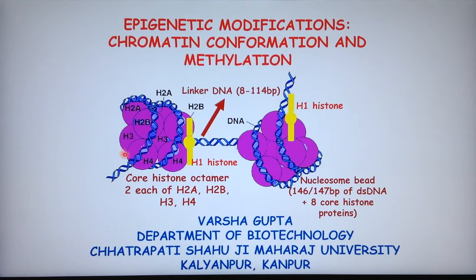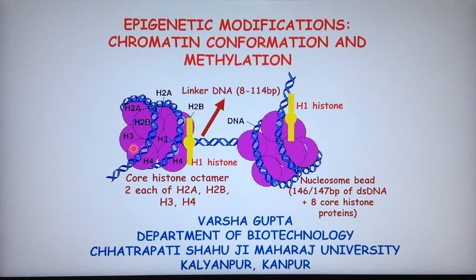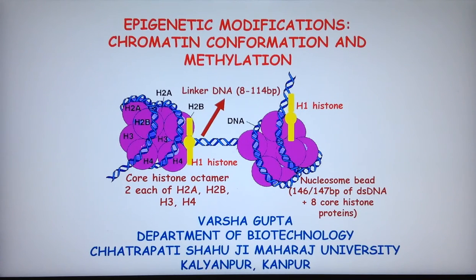The best characterized component of chromatin structure is the nucleosome, which represents the first level of packaging. The DNA is wound around a protein disc consisting of histones H2A, H2B, H3, and H4, two molecules of each. The disc itself is a sandwich, and the DNA is wound twice around this histone octamer to form a nucleosome core.